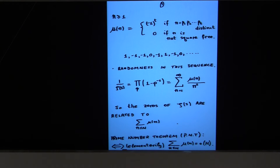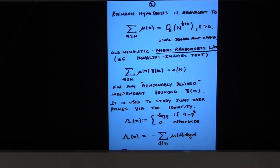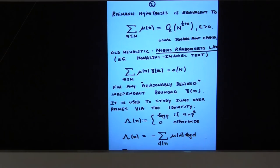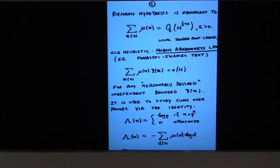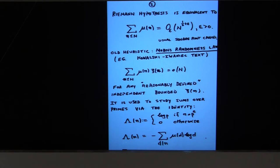Unless you find the prime number theorem boring, you'll find the rest of this interesting. The Riemann hypothesis can also be stated in terms of these partial sums, because the sum of mu(n) up to N cancels as if the mu(n)'s were random numbers — the cancellation to square root of N, give or take an epsilon, is elementarily equivalent to the Riemann hypothesis. This talk is not about the Riemann hypothesis, but pointing out that the randomness of plus or minus one in Möbius is relevant.